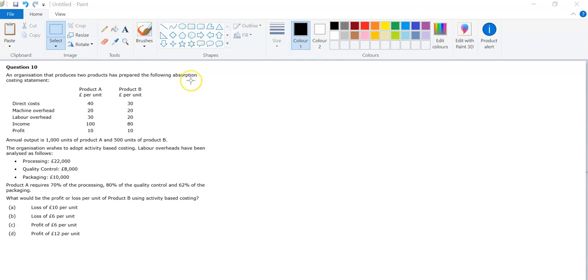Okay, so I'm going to look at question 10. This question is really asking you to kind of look at absorption costing, or rather the better refined version, activity-based costing. You can see here they've done some kind of way of looking at this based on overheads at normal absorption costing.